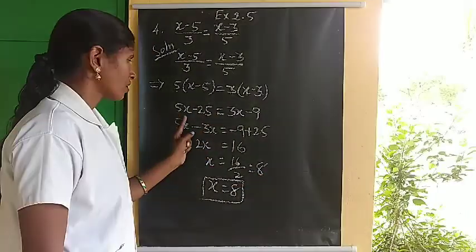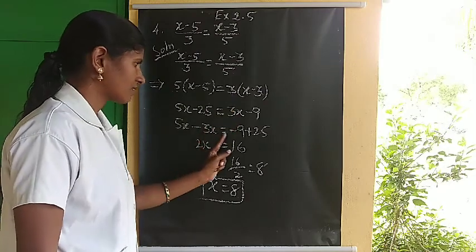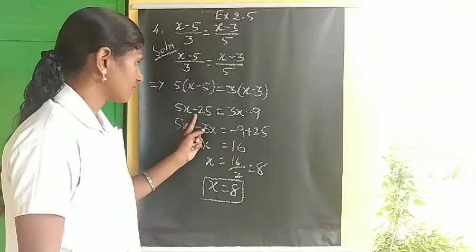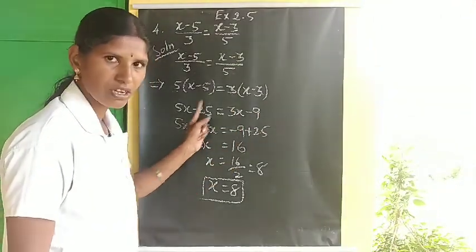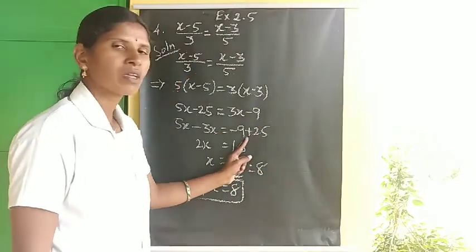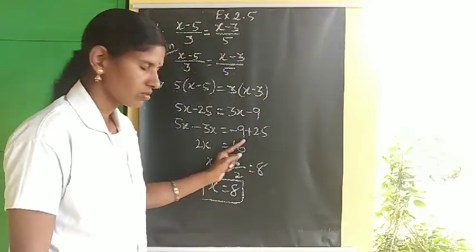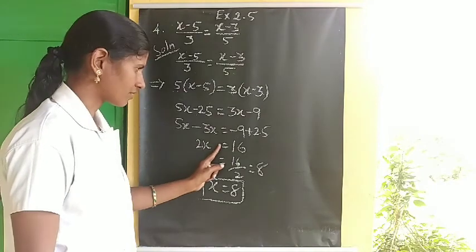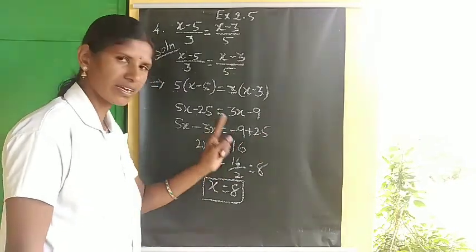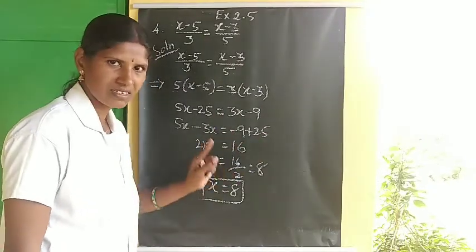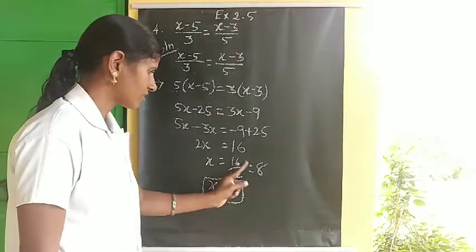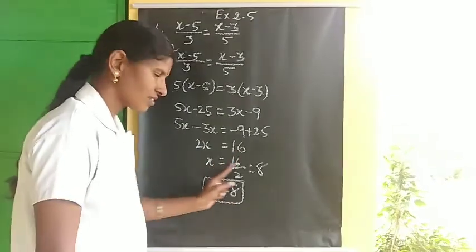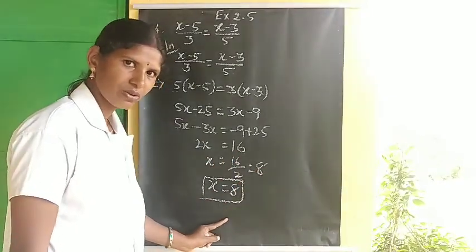Bringing everything together: 5x minus 3x equals 2x, and minus 9 plus 25 equals 16. So 2x equals 16, which means x equals 8.